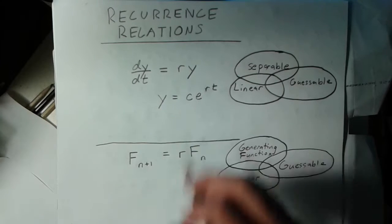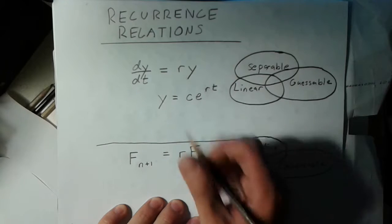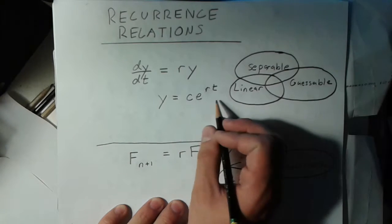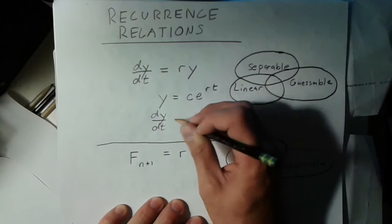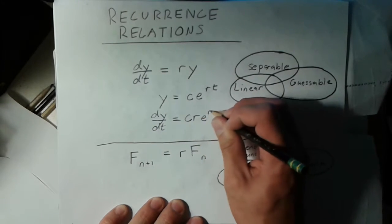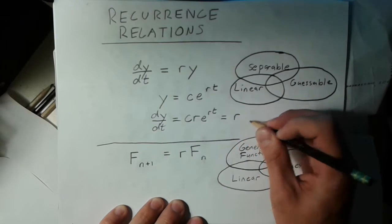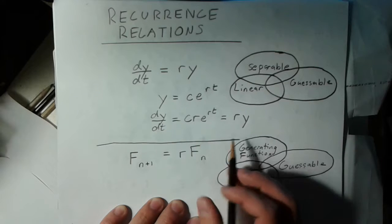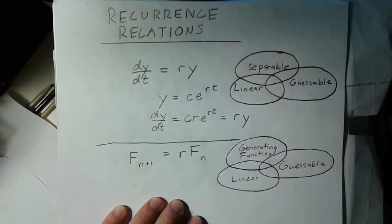In this case we just have a slightly altered version of that. And if we want to confirm that this is the right answer all we have to do is take the derivative. So look at dy dt. We see that this is just c r e to the r t by the chain rule. And that this is just r multiplied by the original function and so it satisfies the differential equation dy dt is equal to ry.